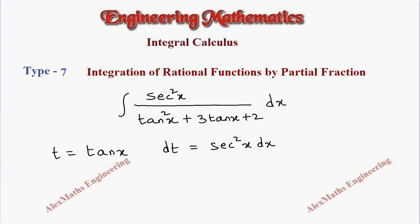We find the numerator is having the term secant square x dx, so that will be replaced as dt. And the denominator will be t square plus 3t plus 2. Now the denominator can be factorized as t plus 1 into t plus 2.